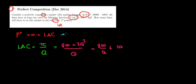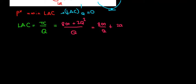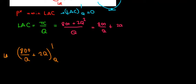We're interested in the minimum point, meaning we want to differentiate the long-run average cost curve with respect to quantity and set it equal to zero, since it is a curve with a minimum point. So we differentiate: d(LRAC)/dQ of 800/Q plus 2Q with respect to quantity.